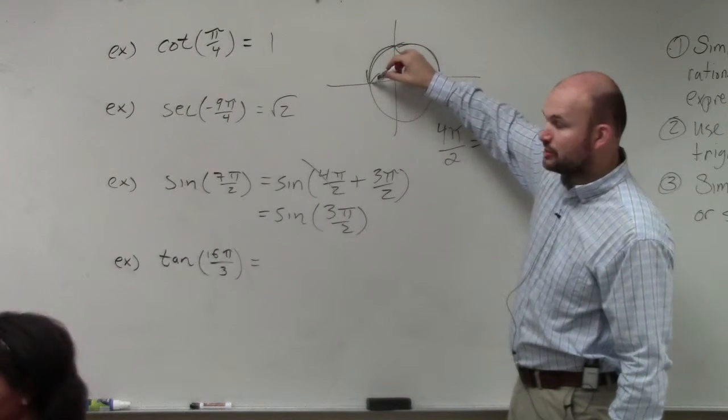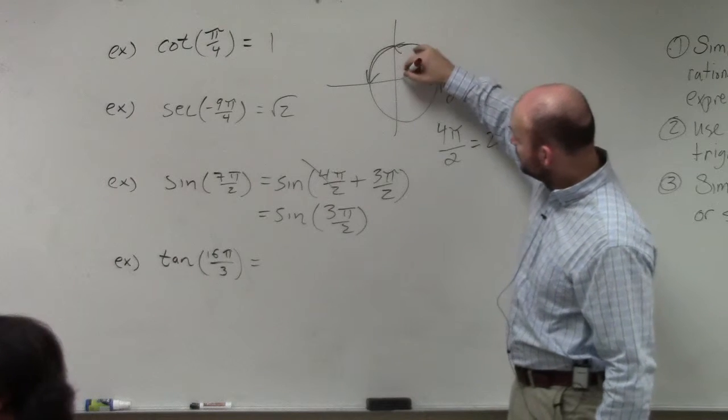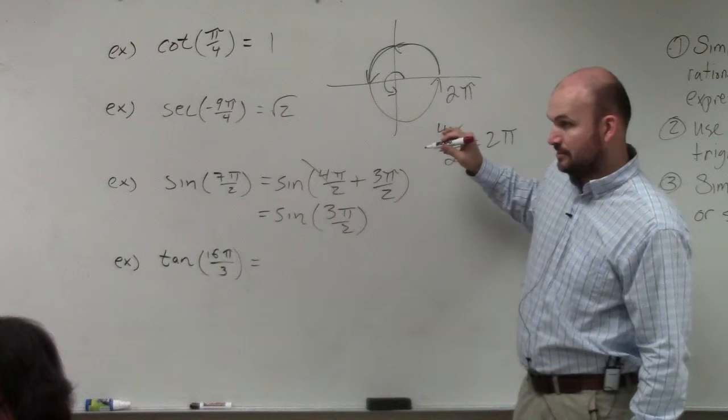Pi over 2, 2 pi over 2, 3 pi over 2, right? Here is 3 pi over 2. Do you agree with me?